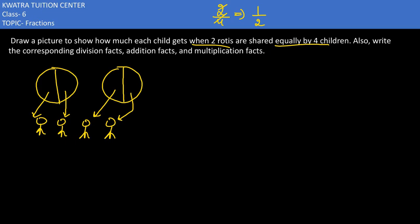So we can understand that one half part of each roti would be given to one student. Now we need to understand — they also say write the corresponding division facts, addition facts, and multiplication facts. We need to write the division facts. Two wholes divided into four parts. Do holes ko humay four parts mein divide karna hai.